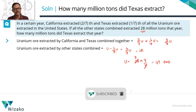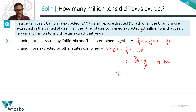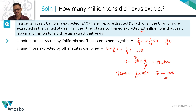What we need to find out is the number of tons extracted by Texas. Texas extracted one seventh of the total in that year. So one seventh of 49 is equal to seven million tons. That's the answer to the question.